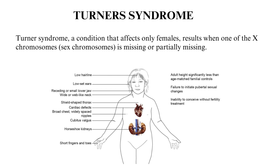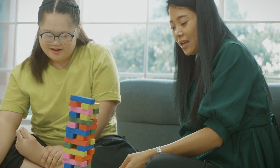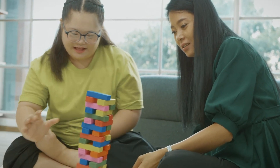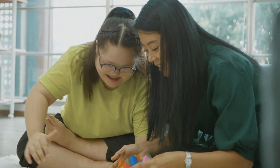The ovaries develop normally at first, but egg cells usually die prematurely and most ovarian tissue breaks down before birth. Many affected individuals do not undergo puberty unless they receive hormone therapy, and most are unable to conceive. A small percentage of people with Turner's syndrome retain normal ovarian function through young adulthood.